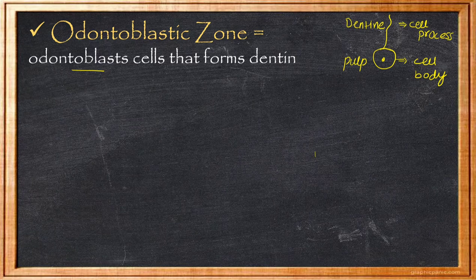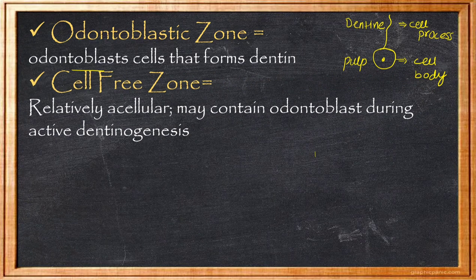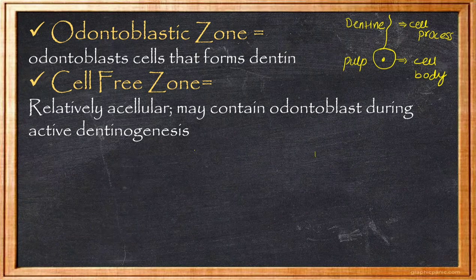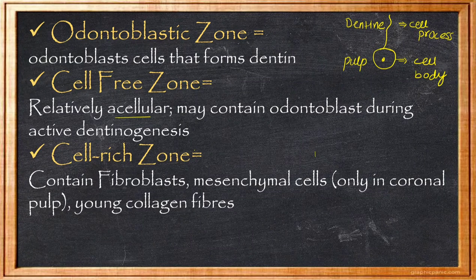The cell-free zone, as the name suggests, usually has no cells present. However, when the adjacent Odontoblast zone is actively synthesizing Dentine, this cell-free zone may sometimes have migrating cells, but it remains relatively acellular. After the cell-free zone comes the cell-rich zone, which contains fibroblasts, mesenchymal cells, collagen fibers, and other cell types.